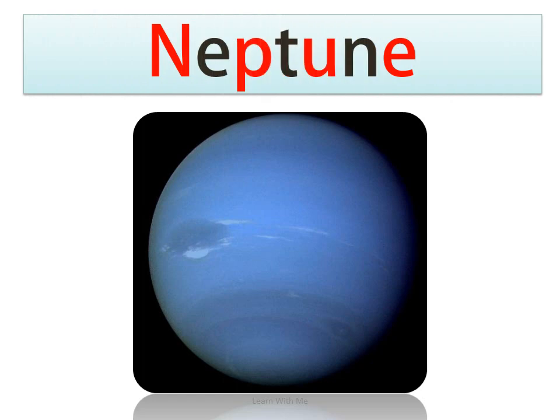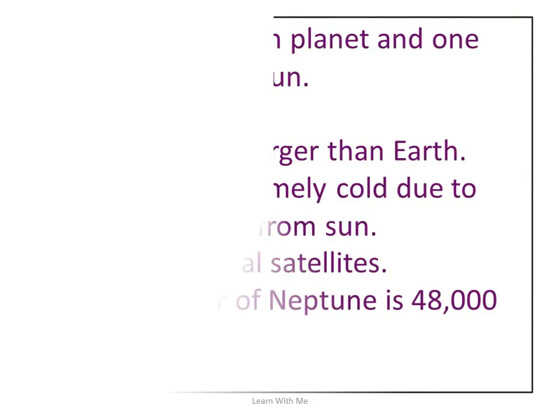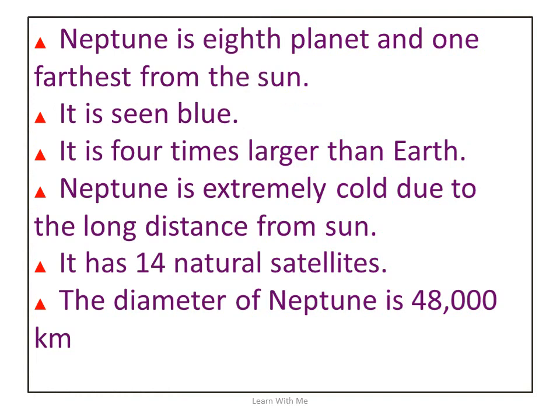Now we discuss about Neptune. Neptune is the eighth planet and the farthest from the Sun. It is blue in color and four times larger than Earth. Neptune is extremely cold due to its long distance from the Sun. It has 14 natural satellites and its diameter is 48,000 kilometers.